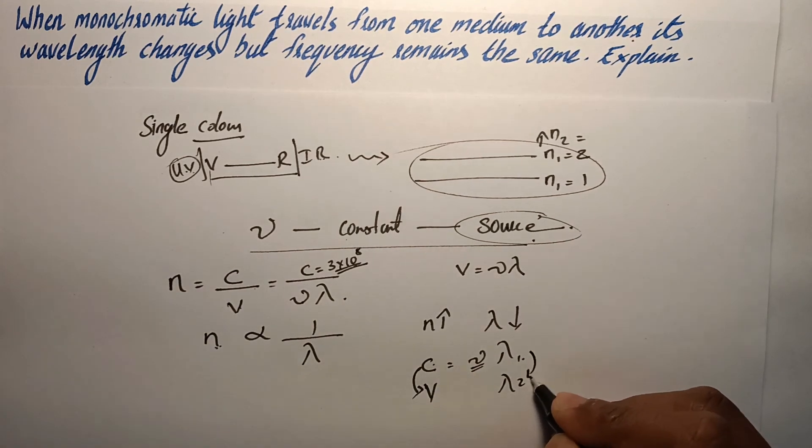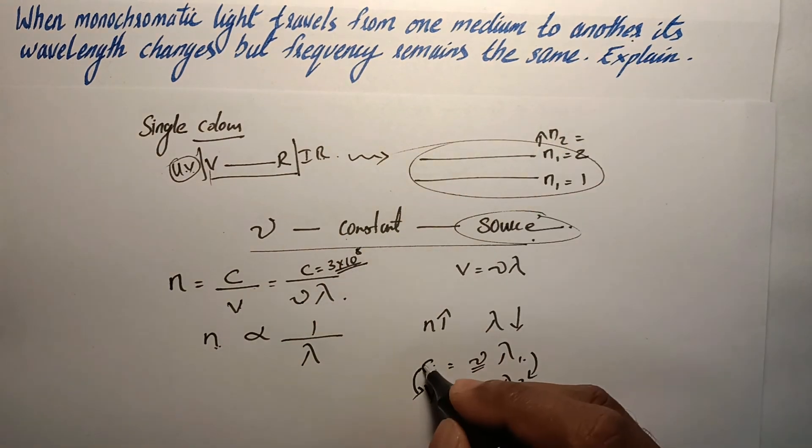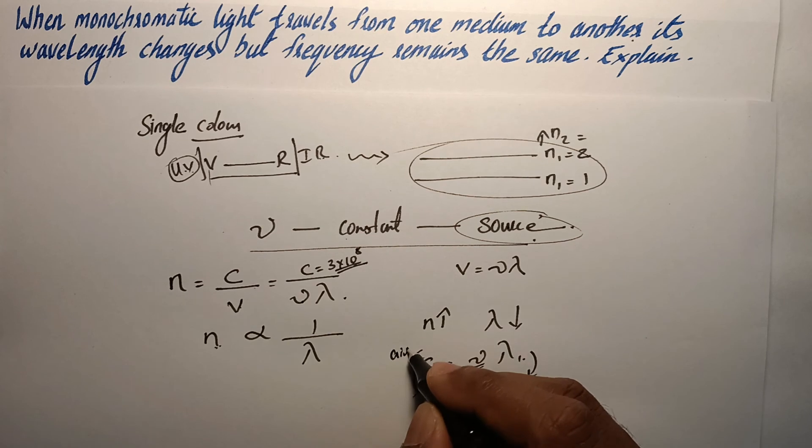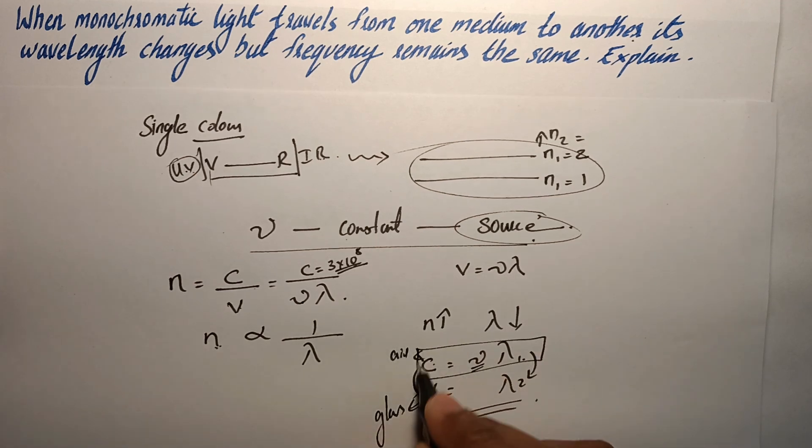When going from one medium to another, the first medium is air and the second medium is something like glass, then the velocity changes. Also, the wavelength changes in order to keep this equation right.